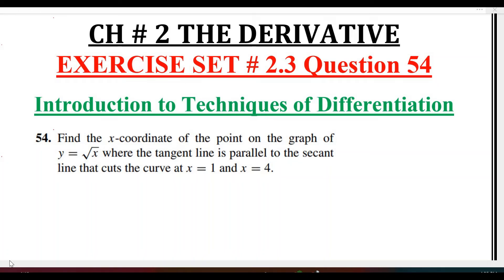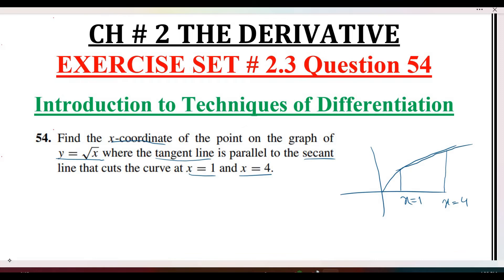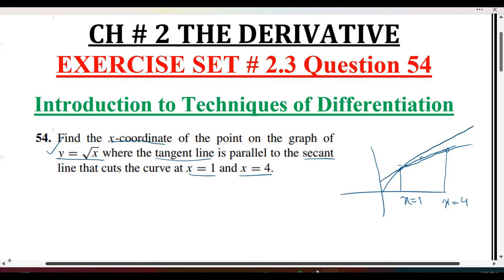This question is similar to question number 53. Find the x-coordinates on the graph where the tangent line is parallel to the secant line, where the secant line cuts the curve at two points. The tangent line touches the curve at one point which is parallel to the secant line.